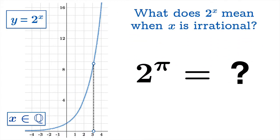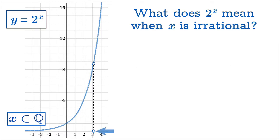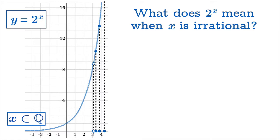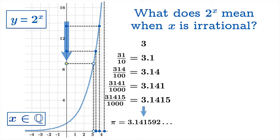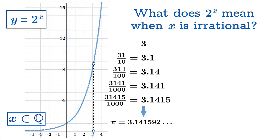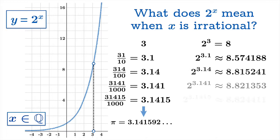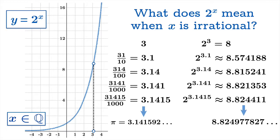Take 2 to the pi, for instance. Pi is not a rational number, but we can sneak up to pi using rational numbers — we can find a sequence of rational numbers that converges to pi. Hopefully, once we find the values of 2 to the x for these rational values of x, those values themselves start sneaking up on some limiting value, and that's what we'll define 2 to the pi to be. You can try this yourself by taking the decimal expansion of pi and chopping it off after various places to get a sequence of rational numbers converging to pi, and watch the values get closer and closer to a limiting value.